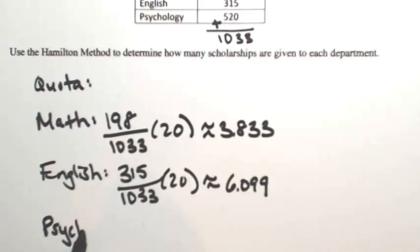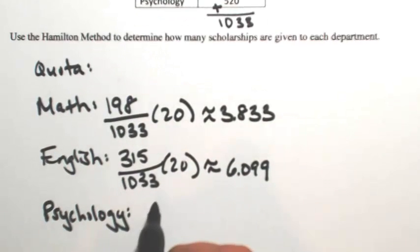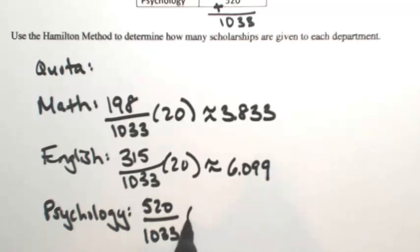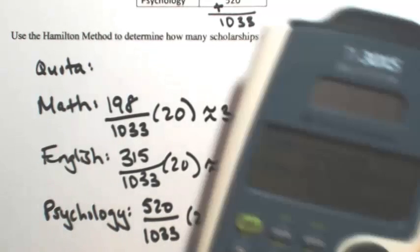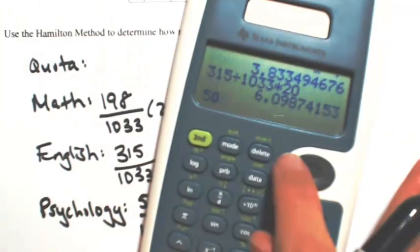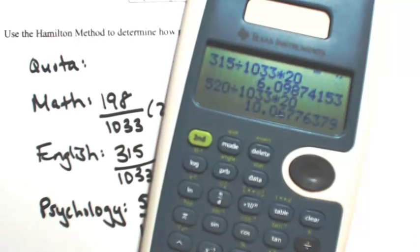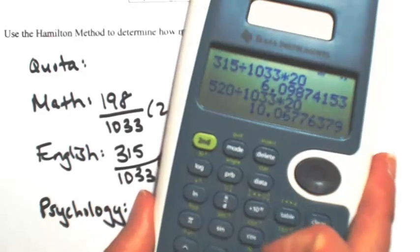For psychology, which takes up a bigger part, they should get more scholarships. So 520 divided by 1,033. That percentage times the number of scholarships will give us their quota: 10.068.